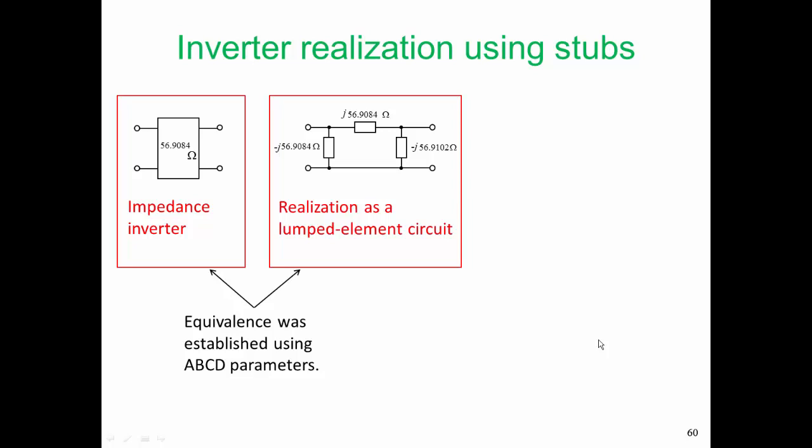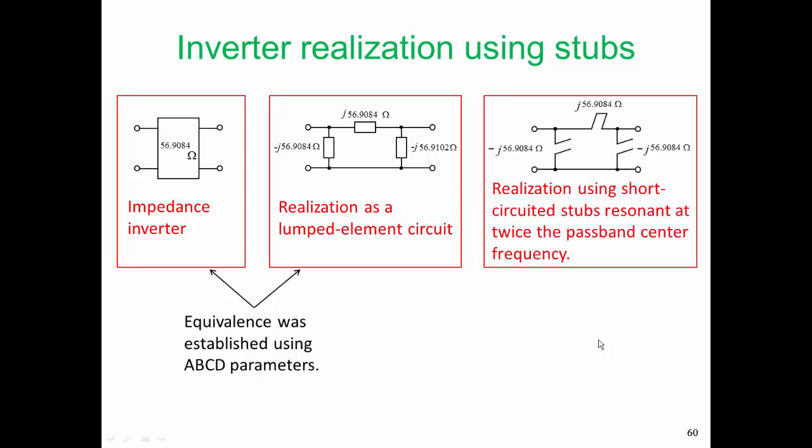Now we can realize these impedances using stubs as shown here. The first impedance has a value of minus j56.9 ohms, so it's a capacitor. We will realize that with a short length of open-circuited stub. The series impedance is an inductance, j56.9 ohms, so we will realize that with a short length of shorted stub.